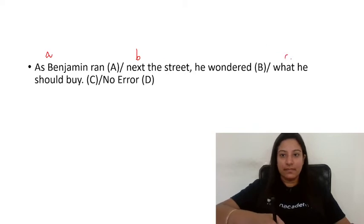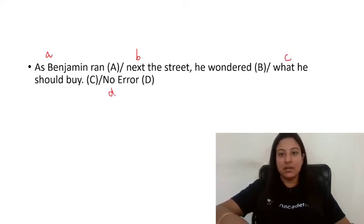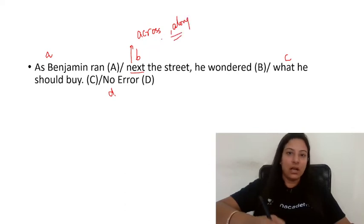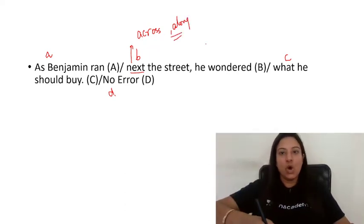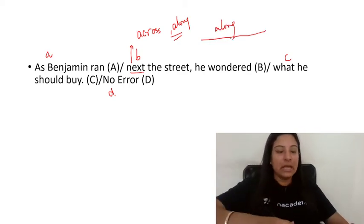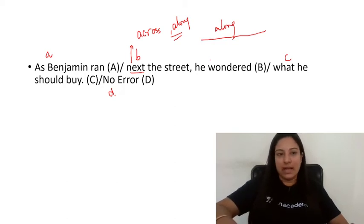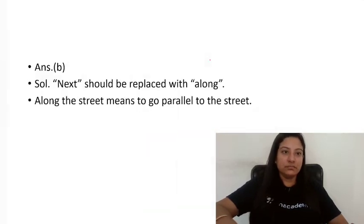Next: 'As Benjamin ran next the street, he wondered what he should buy.' Here, 'next the street' is wrong. Either you run across the street or along the street. 'Across' means you crossed over, and if he is running the length of the street, we say 'along'. 'Next' means beside, which doesn't fit here. So 'along' will replace 'next'.